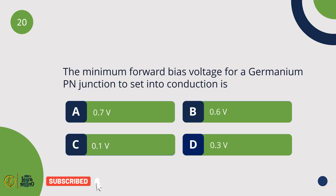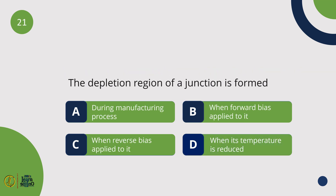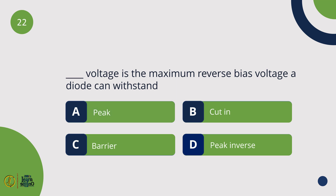The minimum forward bias voltage for a germanium PN junction to conduct is 0.3 Volt. The depletion region of a junction is formed during the manufacturing process. Peak Inverse Voltage (PIV) is the maximum reverse bias voltage a diode can withstand.